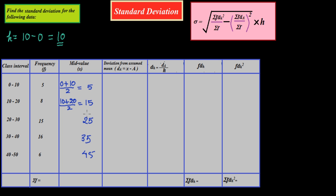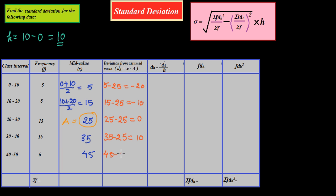Now we take an assumed mean. We are taking A = 25. We can take any value as the assumed mean. So DA, which is X minus A: 5 minus 25 is negative 20, 15 minus 25 is negative 10, 25 minus 25 is 0, 35 minus 25 is positive 10, and 45 minus 25 is positive 20.